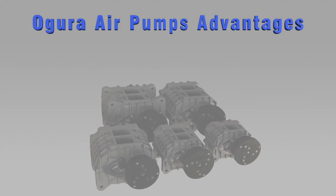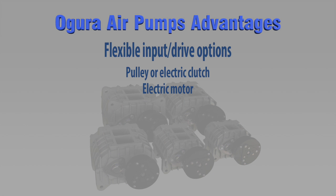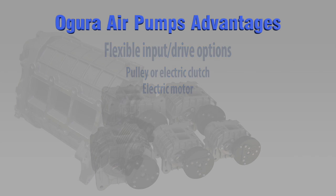Ogura air pumps advantages. When mounting on a gas or diesel engine, the supercharger can be belt driven. The electric clutch option allows the supercharger to be engaged only when needed, reducing parasitic engine load. For non-engine applications, the clutch can be coupled to a direct drive electric motor.